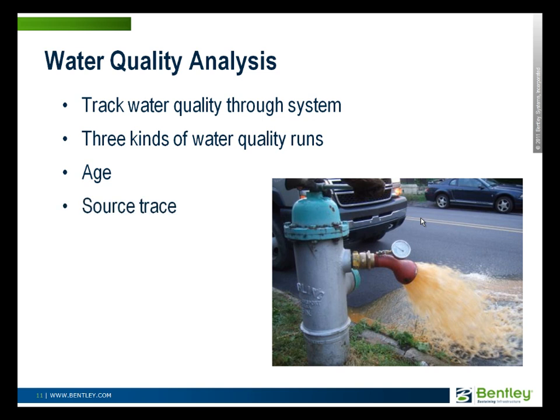You can also trace the source of water, which is especially important in systems that have multiple sources — you want to know which users get water from which sources. A lot of times this is surprising: you would think that water from one source gets to certain users and water from another source gets to others, but when pumps cycle on and off with intermittent operation, the water sloshes around the system a lot more than you'd expect. The final kind of water quality analysis is actually tracking constituents through the system — these can be conservative constituents that don't react, or things like disinfectant residual that is involved in reactions as it moves through a distribution system.